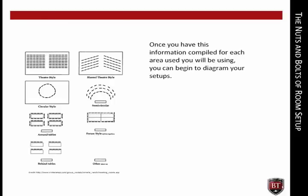Once you have this information compiled for each area, you can begin to diagram your setups. Start with a blueprint of each space showing entrances and exits, existing structures like pillars or built-ins, ceiling height, and windows — paying close attention to the direction they face to prevent harsh sunlight and projection screen problems — and traffic flow. Even take into account the materials the space is made of. Tented fabric rooms need space for climate control devices; rooms with air walls require careful planning on both sides. Marble floors and walls may require sound-buffering draping.